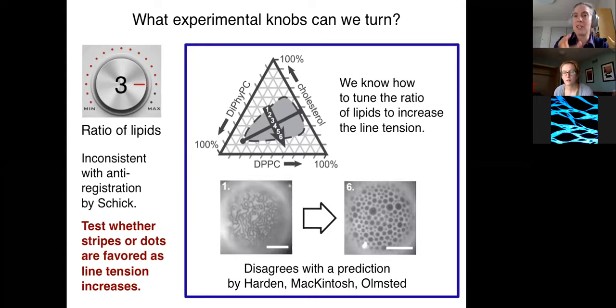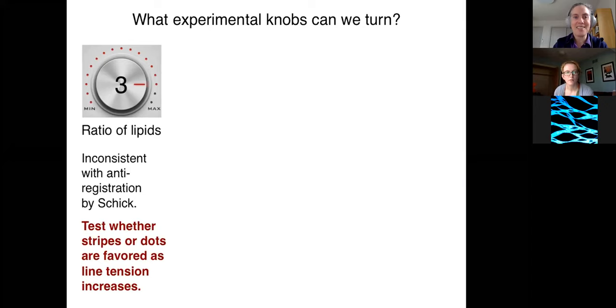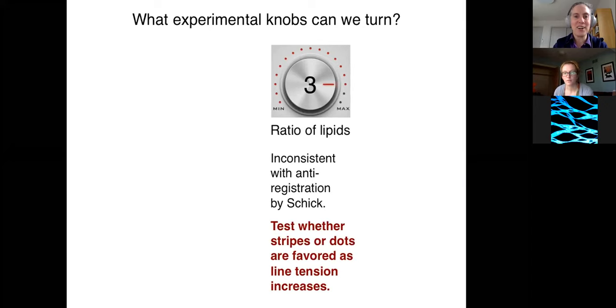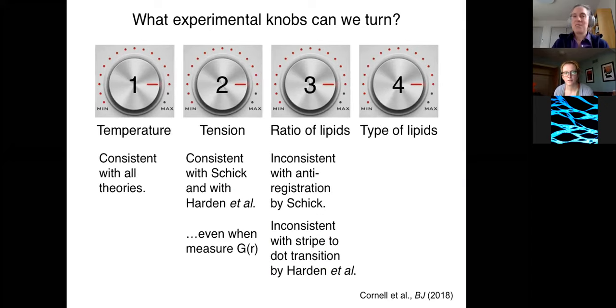Another is whether we see dots or stripes, and in that case we can go from a place that's close to a critical point to a place that's further away from the critical point. So we know how to adjust line tension in this case. What we see is a transition from stripes to dots, and that disagrees with a prediction by Jim and Fred and Peter. They had a particular parameter set for their model.